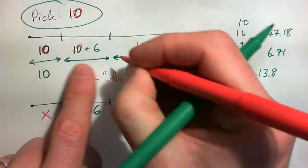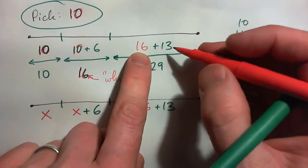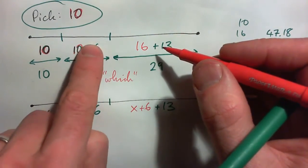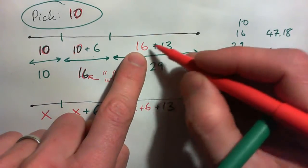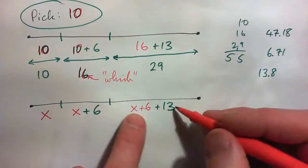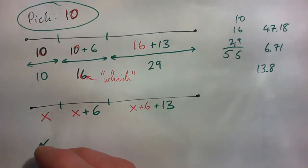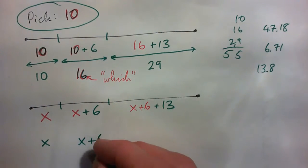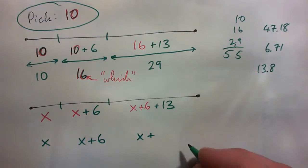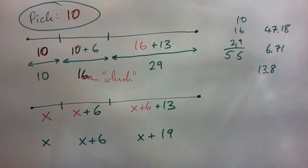So we took our shortest piece, we added 6, but then on to that, because it says which is shorter than, so add 13 onto the 16. So add 13 onto the X plus 6. So our three lengths are X, X plus 6, and X plus 19.